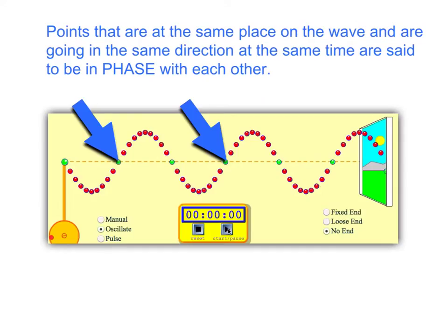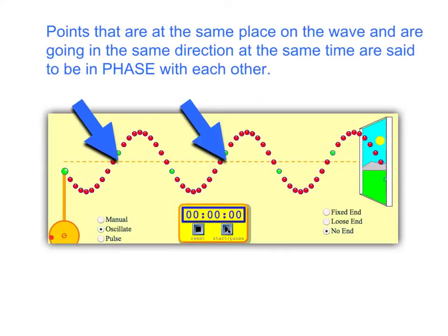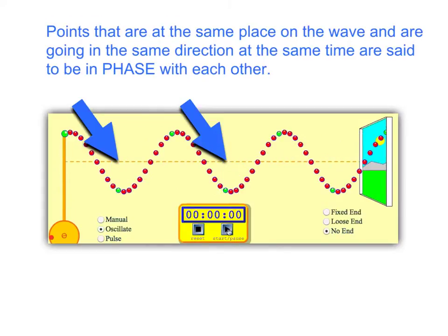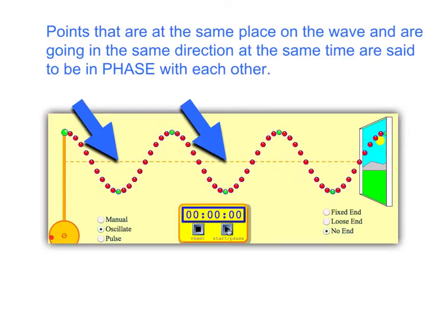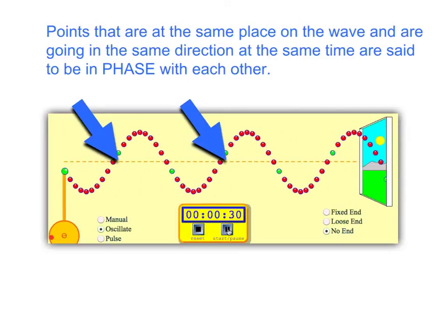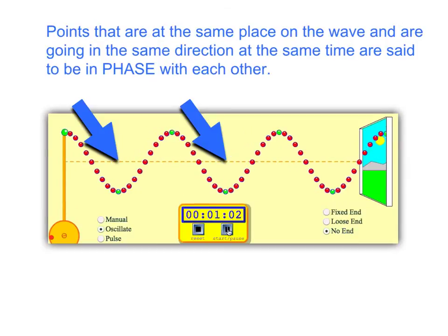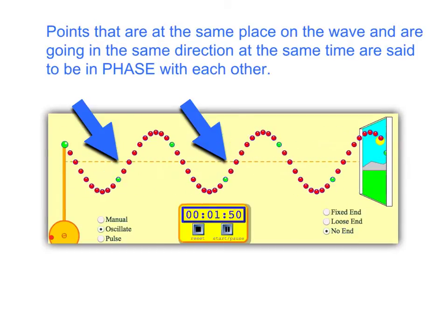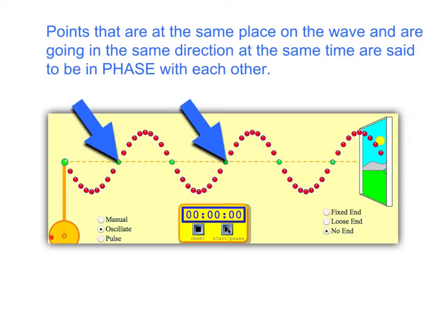Points that are at the same place on the wave and are going in the same direction at the same time are said to be in phase with each other. Let's look at two green dots in the medium, pointed out by the blue arrows, and watch what they do as the wave goes by in slow motion. The green dots go up together and down together — so we say they are in phase with each other.